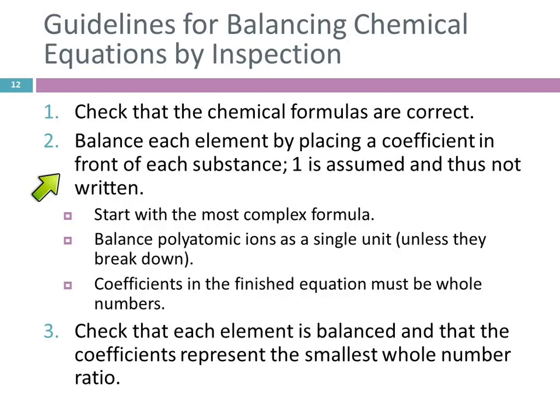And then this is the part where we're really doing something. You balance each element by putting a coefficient in front of the substances. We assume there to be a 1 in front, and so we don't write the number 1. It's kind of a pattern. Chemists don't like the number 1. We don't write it. So if the formula is there without a coefficient, that means the coefficient is 1. If it's other than 1, you write the number. Usually it works out best to start with the most complex or complicated formula.